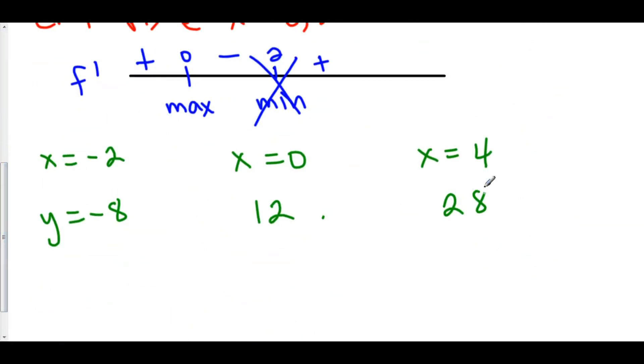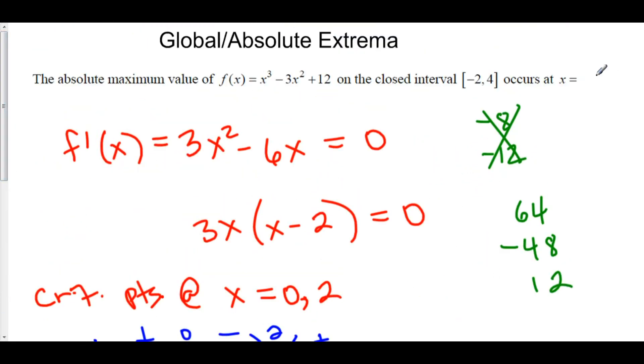And so, even though x = 0 was our relative max, it's not the actual global max on this interval. Instead, we have a global max at x = 4. Why? Because 28 is bigger than 12. So this is actually higher up than our relative maximum was. So the answer is that we have a relative max at x = 4.